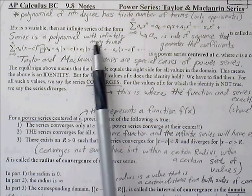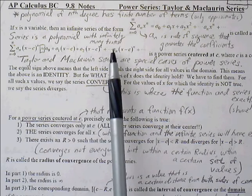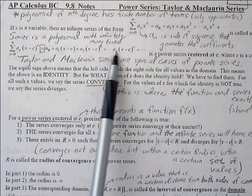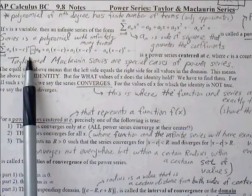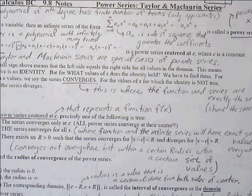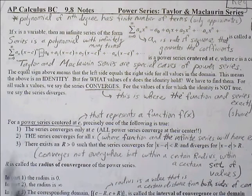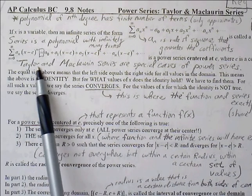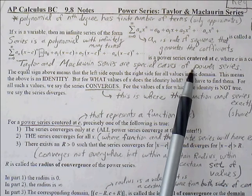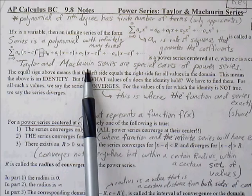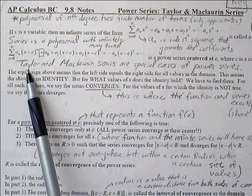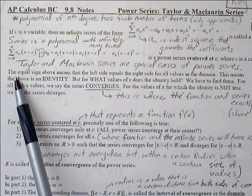A power series is a polynomial with infinitely many terms. This expression represents a power series centered at the value c, where c is a constant. The Taylor and Maclaurin series are special cases of power series. The Maclaurin series is always centered at x equals 0, while the Taylor series is more flexible — it can be centered at values other than x equals 0.